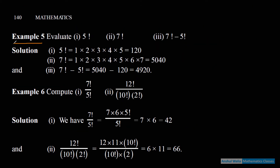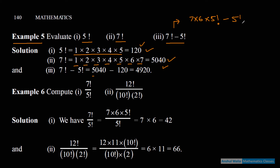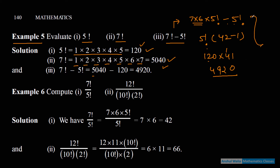कुछ examples हैं — evaluate 5 factorial: 5×4×3×2×1 = 120. 7 factorial = 5040. 7 factorial − 5 factorial: smarter way — 7 factorial में 7×6 लिखो, फिर 5 factorial बचेगा, minus 5 factorial। 5 factorial common निकालो: 5 factorial × (42−1) = 120 × 41 = 4920.